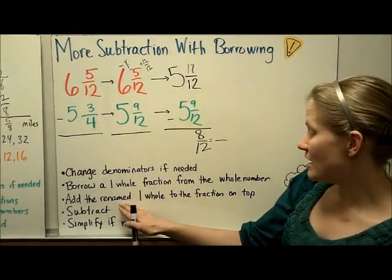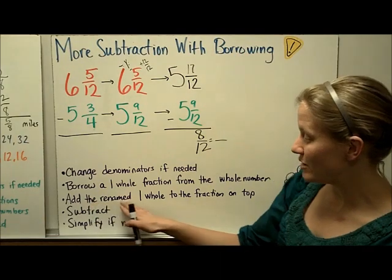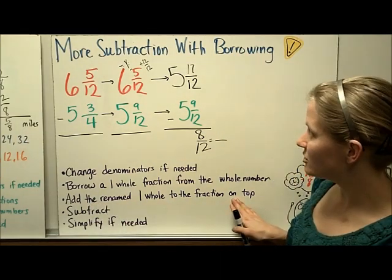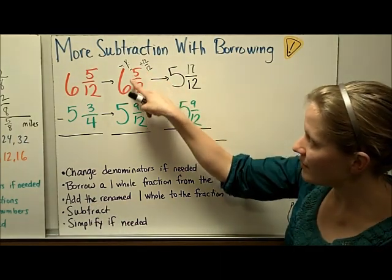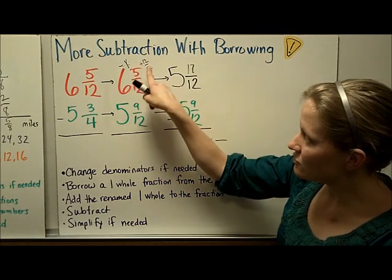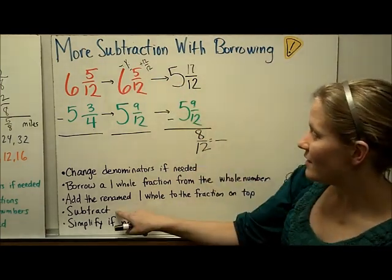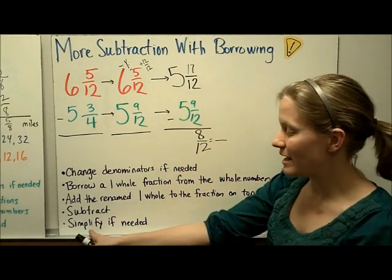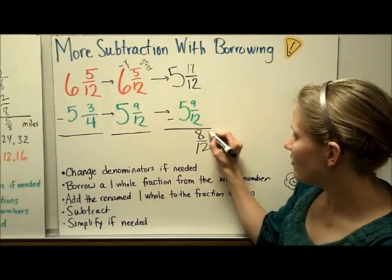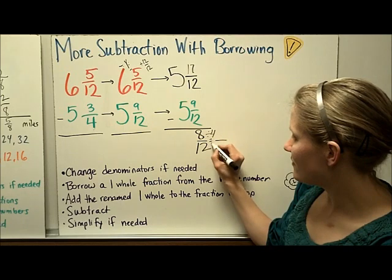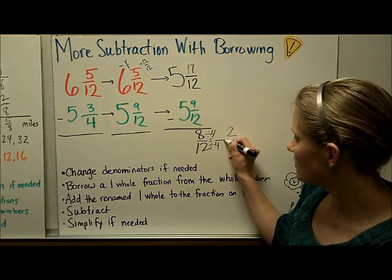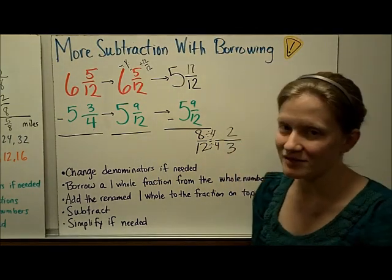So I renamed... Let's go back and look. I renamed the 1 whole fraction on top. That's right here. When I added the 12/12 to the 5/12, I renamed it to 17/12. Then I subtracted. And now my last step is to simplify. I'm going to divide by the greatest common factor, which is 4. And I get 2/3 is my answer.